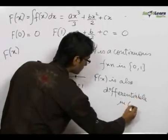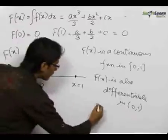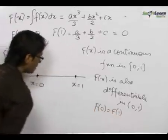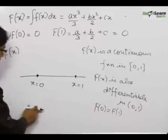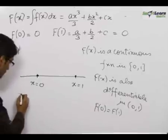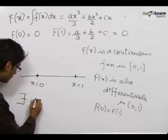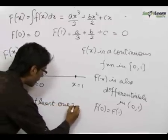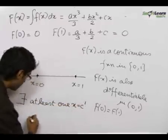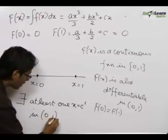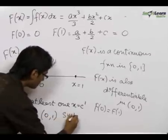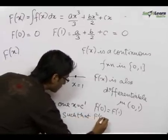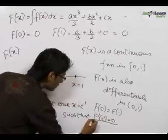Then there exists at least one x equals c dash in the given range which is 0 to 1 in our case, such that F dash of c dash is equal to 0.